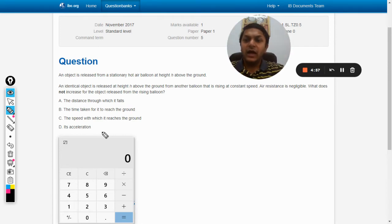The question is: an object is released from a stationary hot air balloon at height h above the ground. An identical object is released at height h above the ground from another balloon that is rising at constant speed.